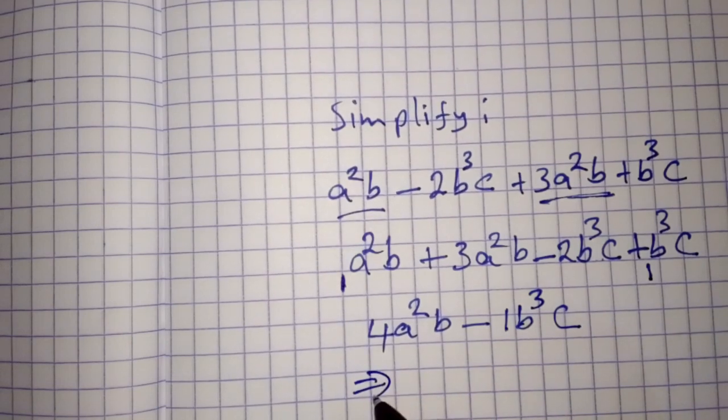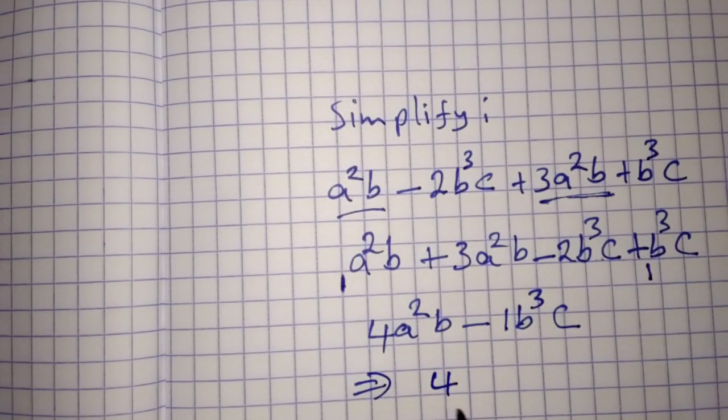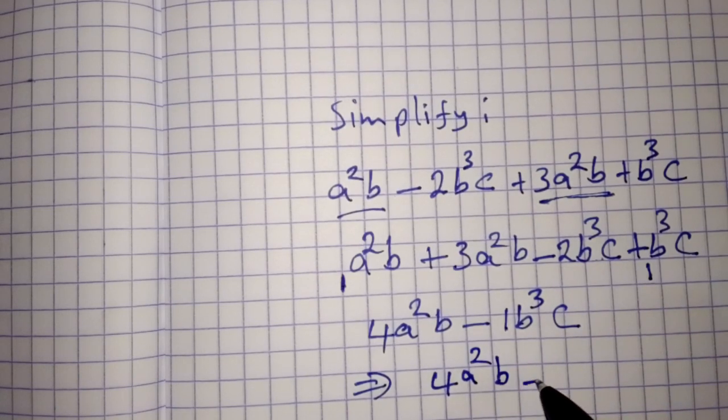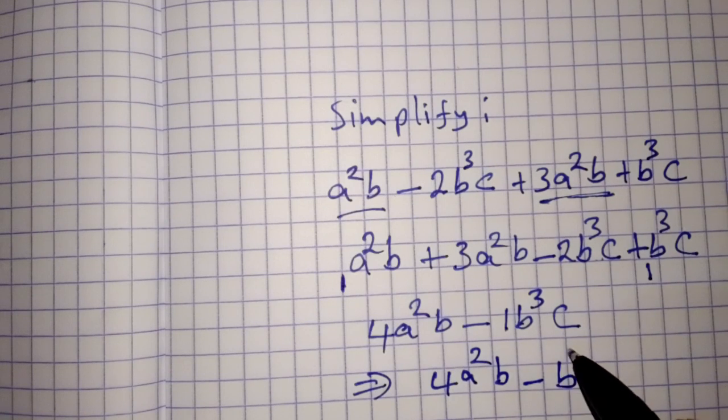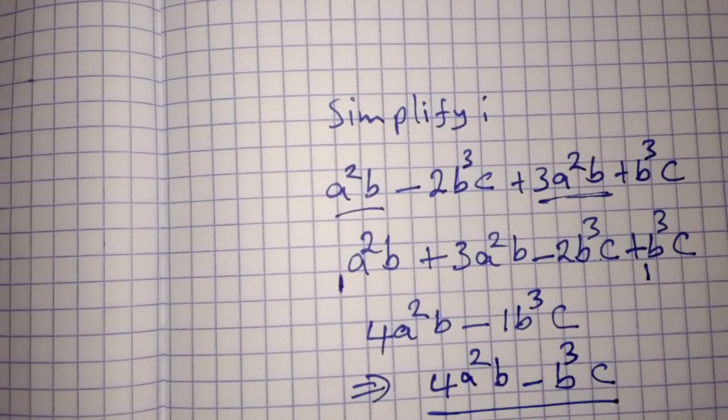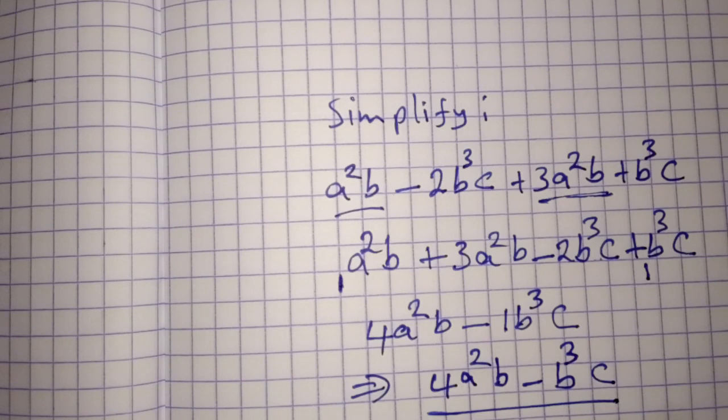Which is just the same as 4a²b minus b³c. 4a²b minus b³c.